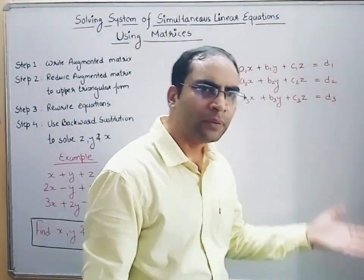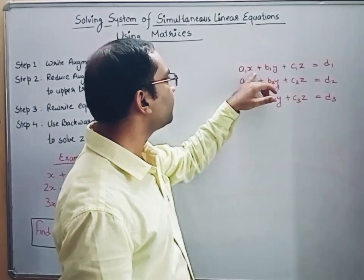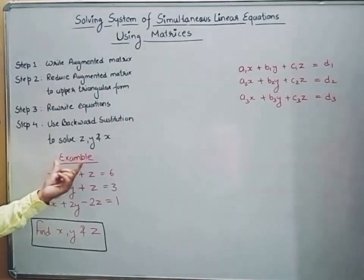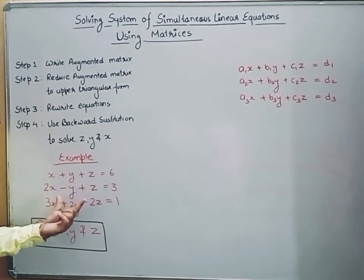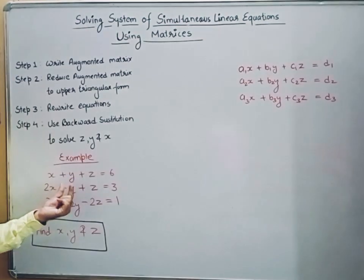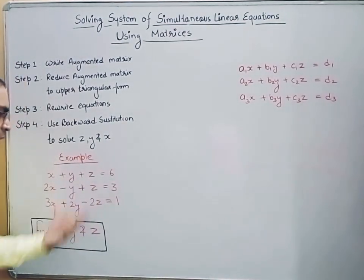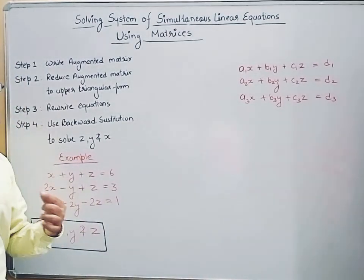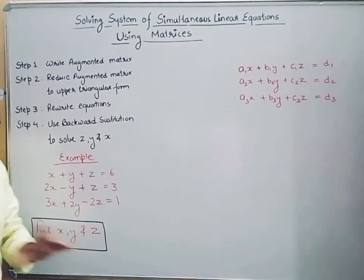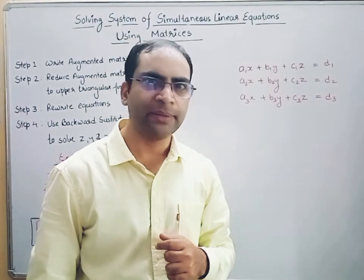We need to solve this system and find out the values of x, y, and z. Here is an example where we have three equations: x plus y plus z equals 6, 2x minus y plus z equals 3, and 3x plus 2y minus 2z equals 1. This is called a system of simultaneous linear equations, and we need to solve for x, y, and z using matrices.